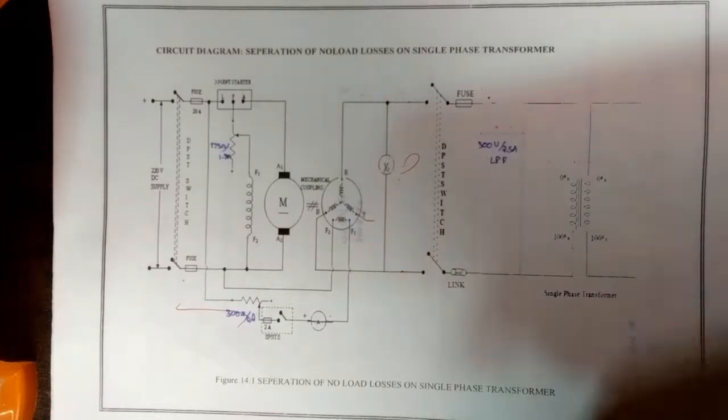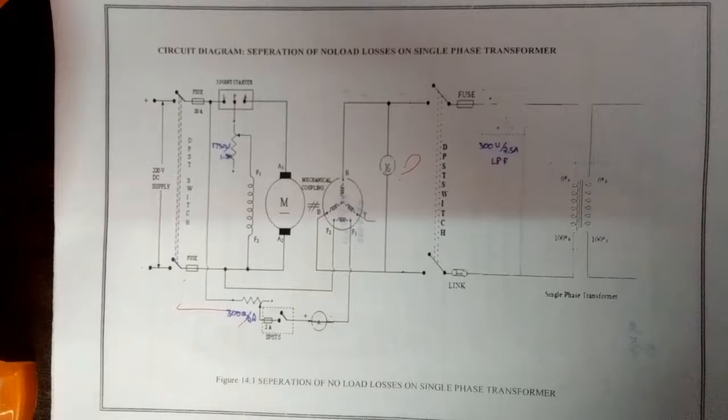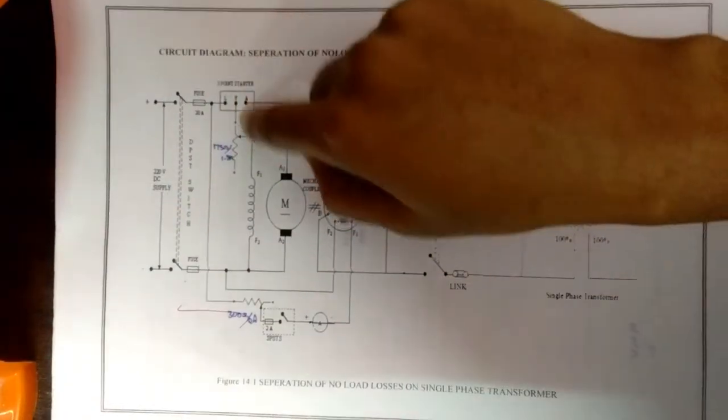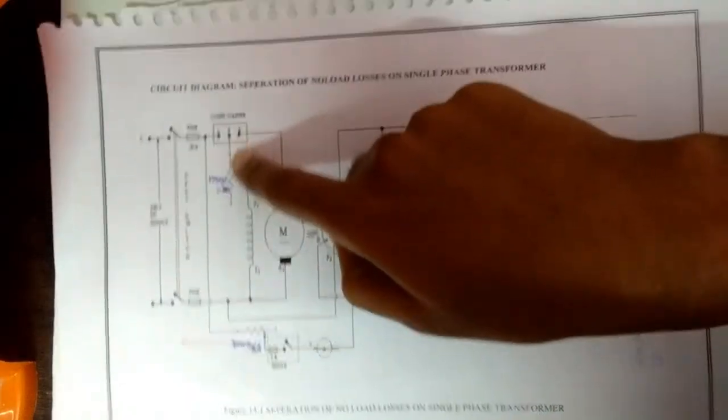So the procedure will be: the supply is given by closing the DPSD switch. The DC motor is started using the three point starter and brought to the rated speed by adjusting the field rheostat.